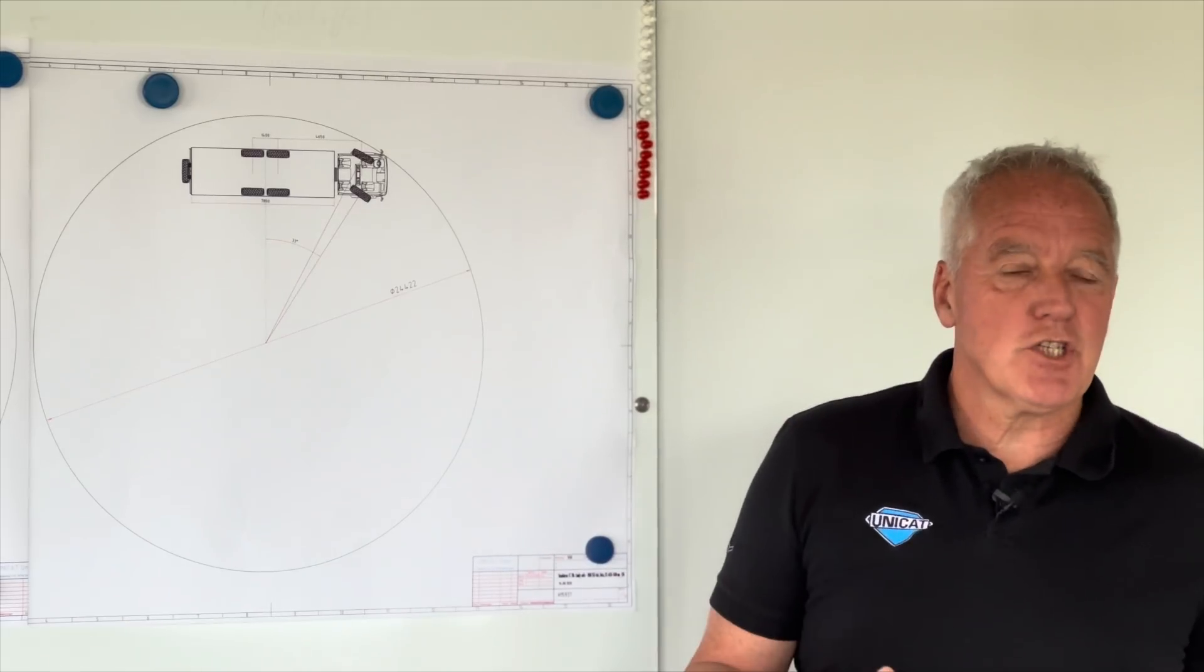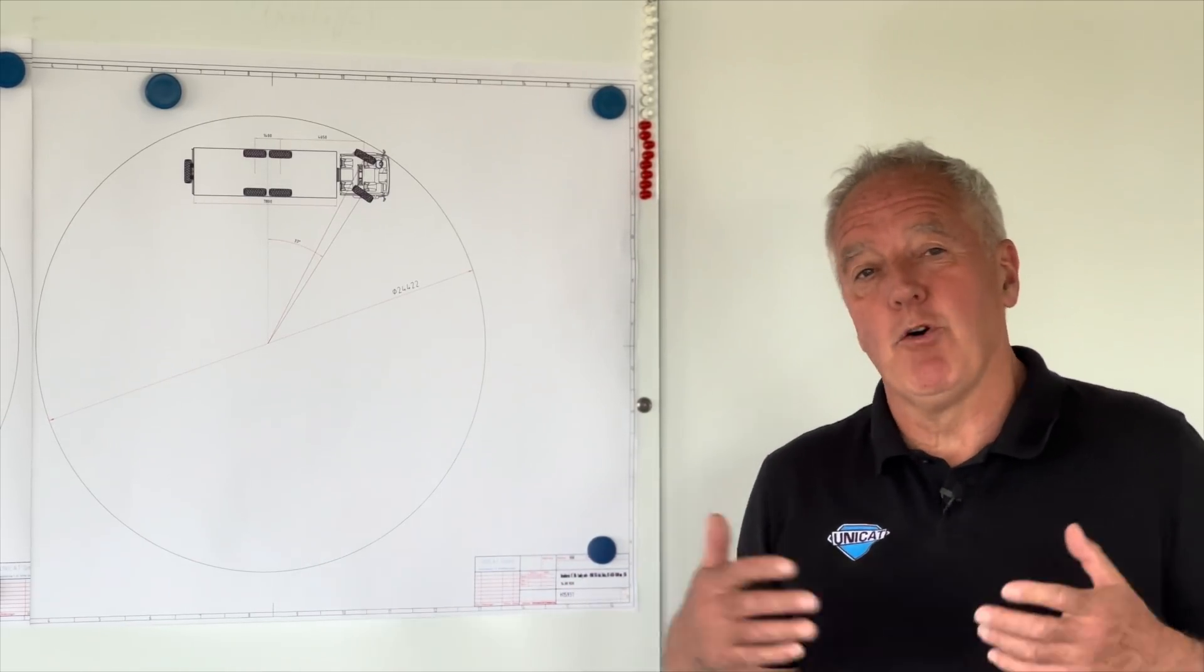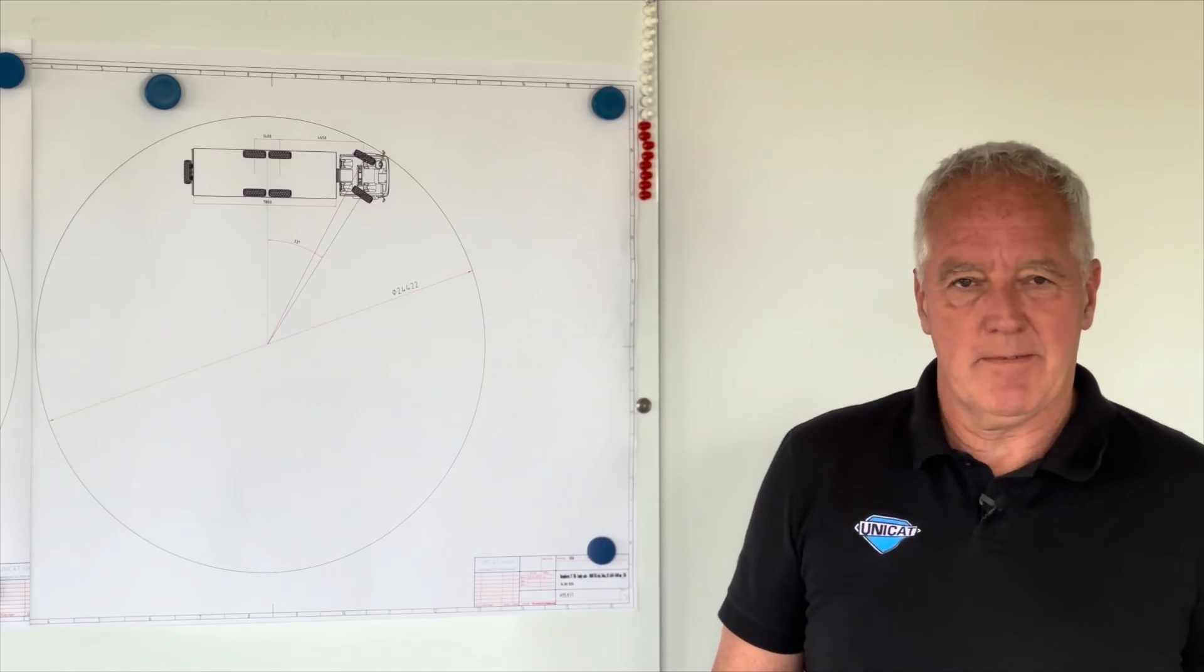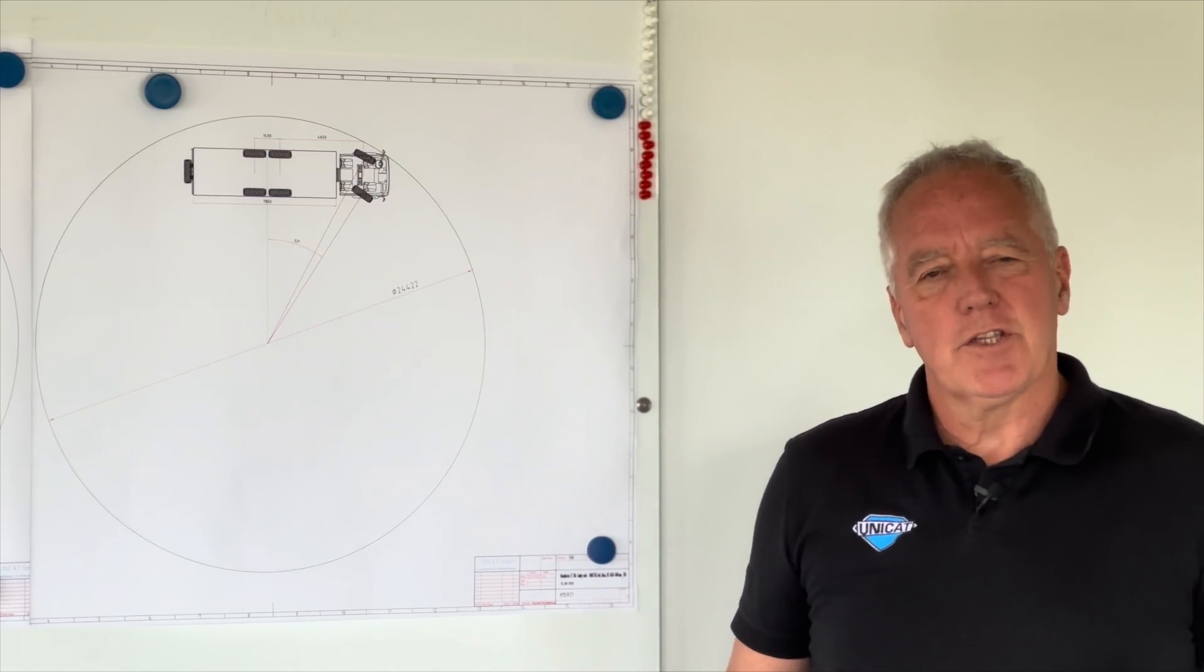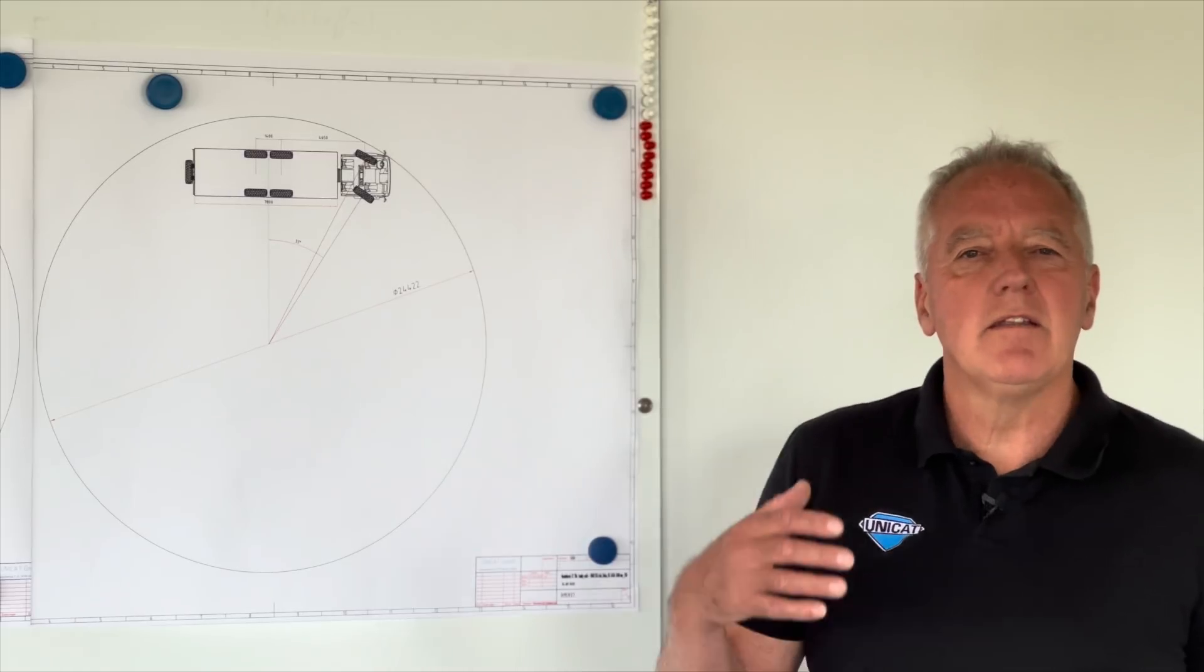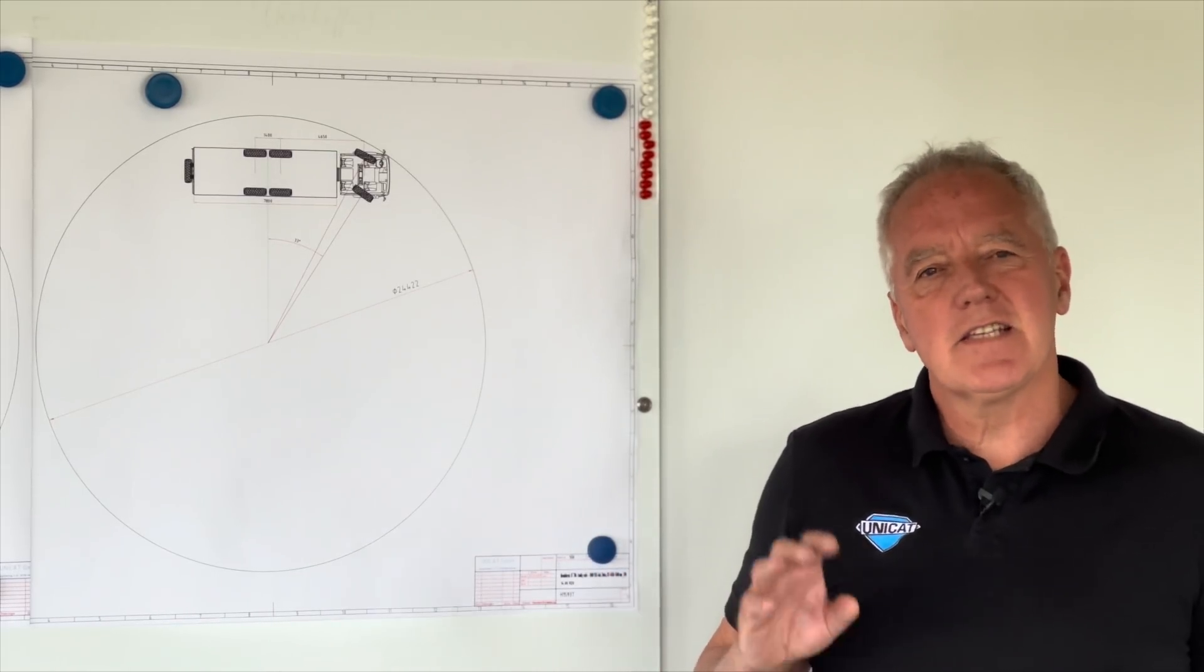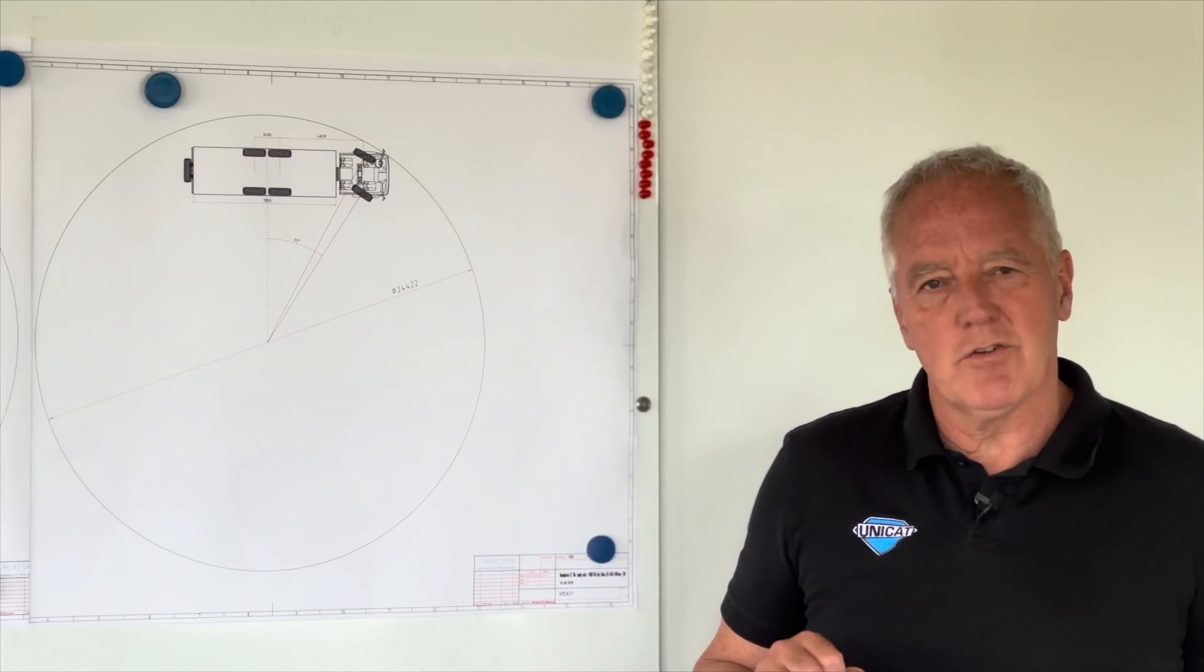And then the next question is, will it be a 4x4, will it be a 6x6 or even an 8x8? Now the turning circle is one important issue in this, and this is something we want to explain to you today.